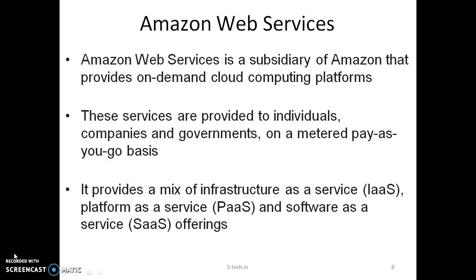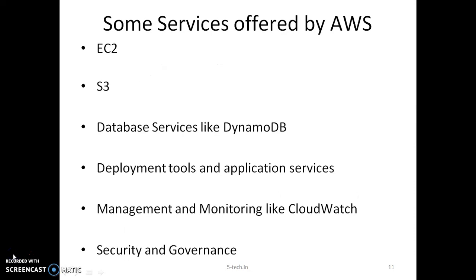AWS operates on a pay-as-you-go basis and provides Infrastructure as a Service, Platform as a Service, Software as a Service, and hybrid services. Amazon Web Services offers more than 100 services, including EC2, S3, database services, management, and more. We'll be covering these services in detail in our next video — kindly subscribe to our channel for further videos. Thank you very much.